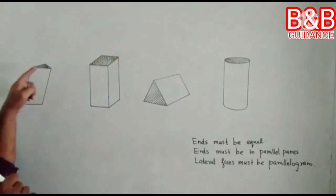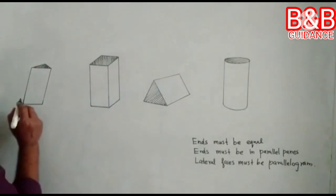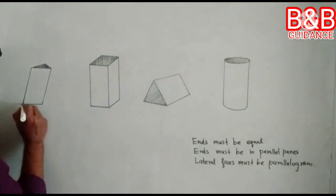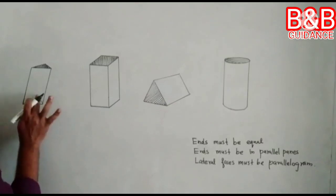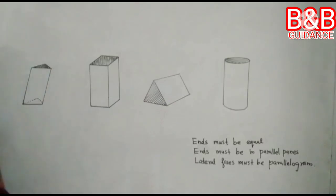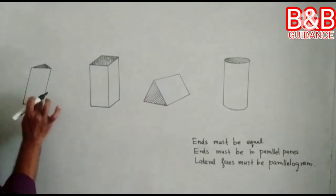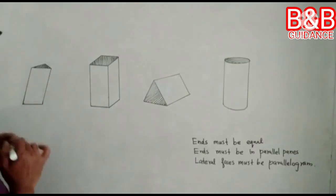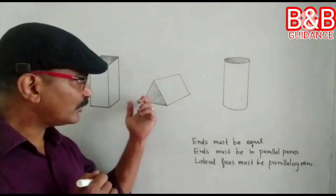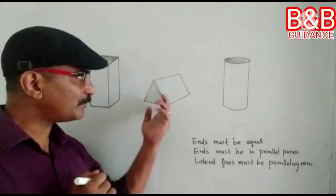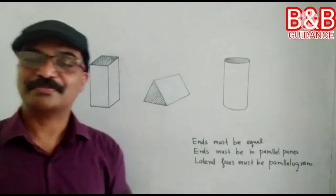This end and this end will also have the same shape — the same shape, and that is identical also. So the first condition is satisfied. Here, this end is triangular in shape, and the other end is also triangular in shape.